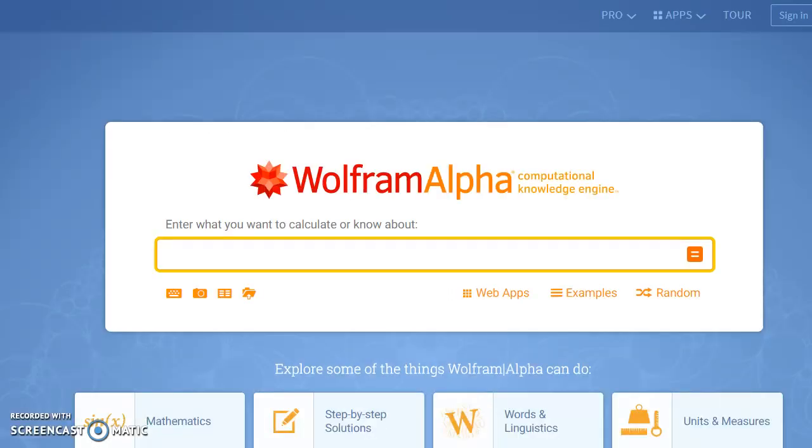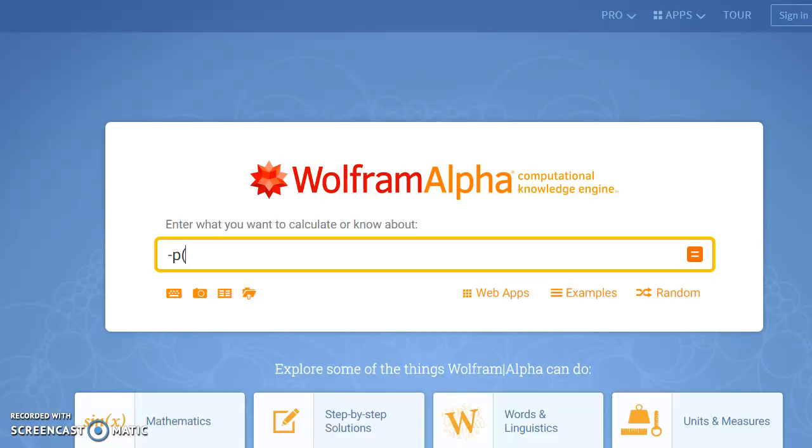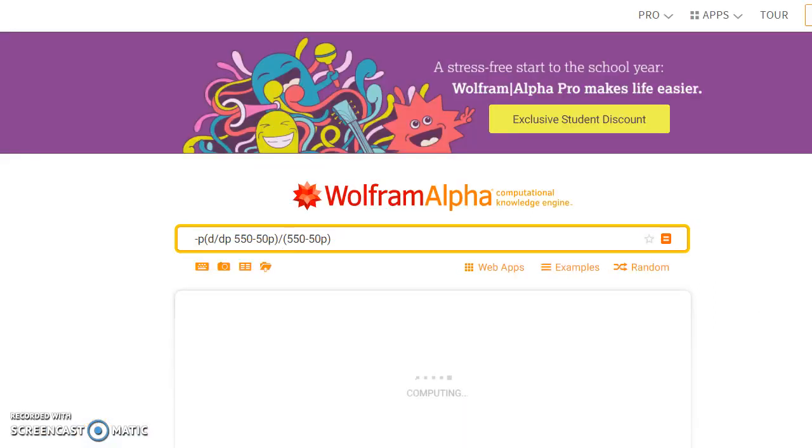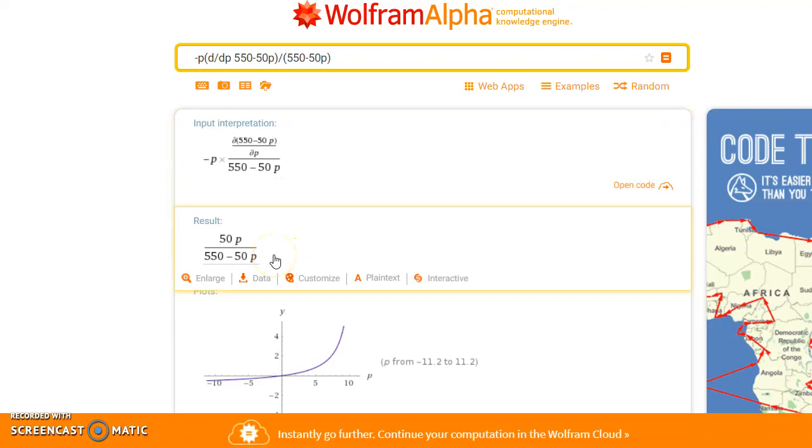So, flipping back to Wolfram Alpha, we can again evaluate this as negative p times d over dp, so the derivative of our price-demand function, divided by the original function. Again, we can glance at this input just to make sure that that's correct, and we get our elasticity of demand function.